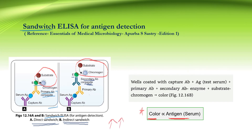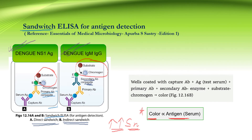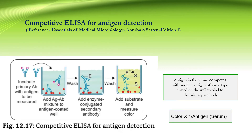Sandwich ELISA is preferred because it has higher sensitivity than other tests. In Dengue ELISA, direct sandwich ELISA technique is used for Dengue NS1 antigen detection, and indirect sandwich ELISA, also known as double sandwich ELISA, is used for Dengue IgG and IgM antibody detection.